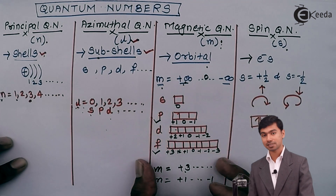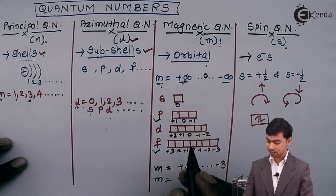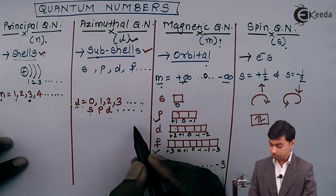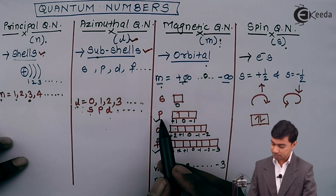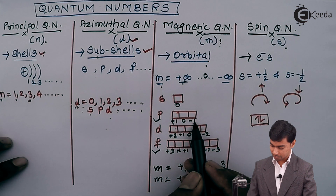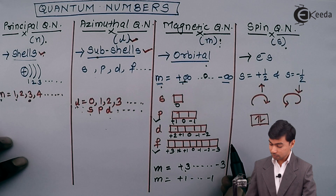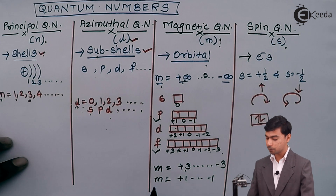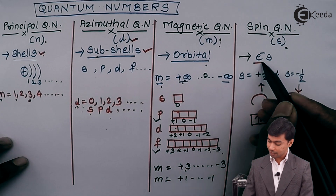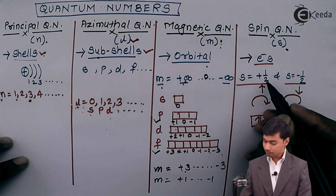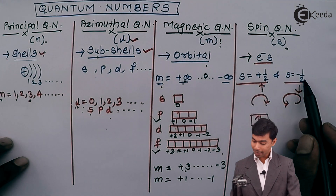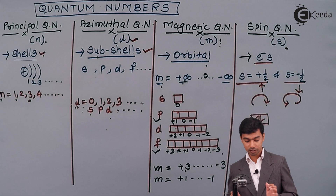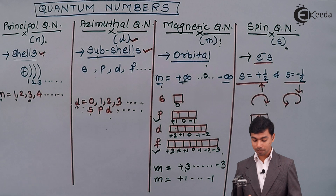For the magnetic quantum number, always place 0 at the center of the orbitals, with positive values in one direction and negative values in the other. For the p subshell with three orbitals: 0 at center, +1 and −1. For the f subshell with seven orbitals: 0 at center, +1, +2, +3 and −1, −2, −3. Finally, the spin quantum number, denoted by small s, gives information about electrons with values of plus half and minus half — plus half means ascending (clockwise), minus half means descending (anti-clockwise). These four quantum numbers together give the complete detailed information of an atom.